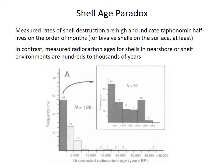However, there's a paradox. When people measure the rates of shell destruction by tagging and tracking shells in a coastal environment today, they find very, very high rates of destruction, suggesting taphonomic half-lives on the order of months for a typical bivalve shell — suggesting that within a few decades there should be no shells left. However, when you measure the ages of shells in a near-shore or shelf environment using radiocarbon methods, you find that many shells are hundreds or even thousands of years old. So how can we reconcile these two things?